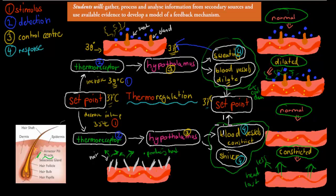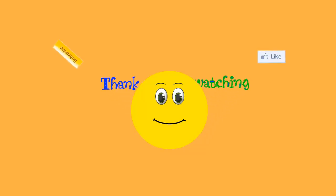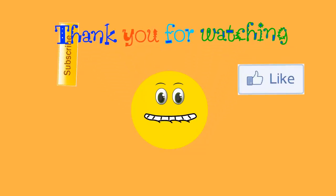You should know that the feedback mechanism is all about the stimulus — which is the thing that goes too high or too low — being affected by our response, which brings it back to normal. A stimulus is away from normal, and a response brings it back to normal. I hope that was useful, thank you for watching.